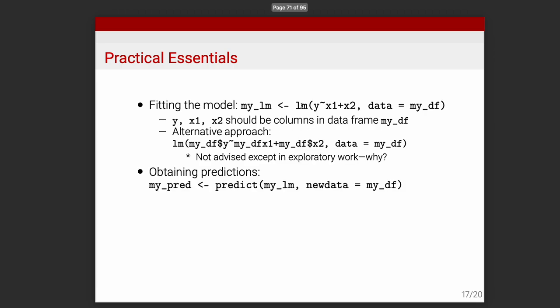The my_lm object does a lot for us. You can obtain predicted values using predict(my_lm, newdata = my_df). This might be important for your papers — for example, plotting predicted outcomes on the y-axis against age on the x-axis based on your regression model. The predict function takes the lm object as input and spits out predictions.